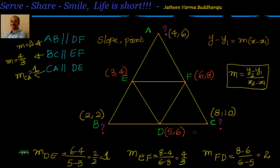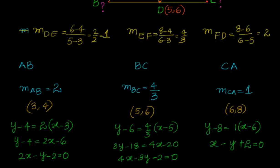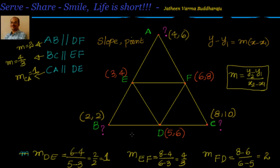To summarize: we were given midpoints and had to find the vertices by finding equations of the sides. Using the midpoint theorem, a segment joining midpoints of two sides is parallel to the third side, so we know all three slopes. With slope and midpoint known for each side, we apply the point-slope formula to get the equations, then solve them algebraically for the vertices. See you in the next session for another interesting example on straight lines. Thanks for visiting, bye for now.